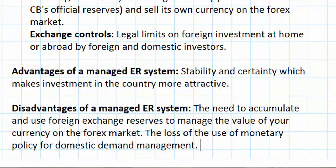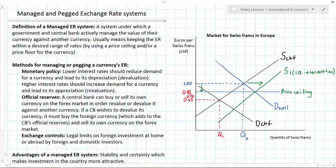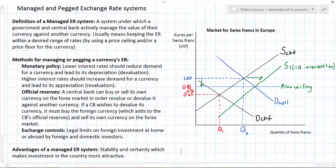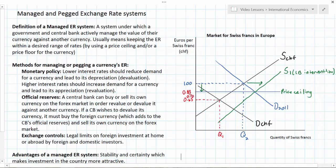This essentially takes one of the important tools out of the toolkit of macroeconomic policy makers for promoting the objectives of full employment, economic growth, and price level stability. In this lesson we have distinguished between a managed exchange rate system and a floating exchange rate system, and shown how monetary policy and the accumulation or sale of official foreign exchange reserves allow a central bank to maintain the value of its currency below a price ceiling or above a price floor. Exchange controls require the government to set limits on how much foreign investment is done within or outside the country.